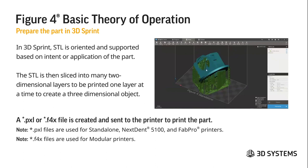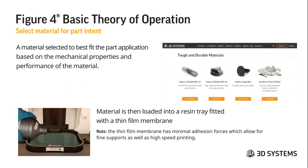Once you put this into 3D Sprint, the STL is then sliced into many two-dimensional layers to be created one layer at a time, creating your three-dimensional object at the end of the print. When sliced, 3D Sprint creates a .pxl or .f4x file that is sent to the printer or controller. Note that .pxl files are used for standalone NextDent 5100 and Fab Pro printers, while .f4x files are used for modular printers.